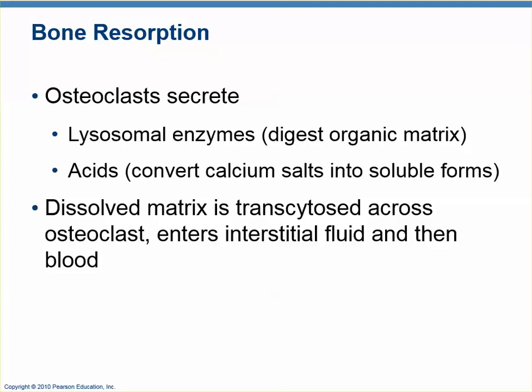Bone is taken away by osteoclasts, which act like macrophages that eat bone. They have enzymes that digest the organic parts — the osteoid — and acids that dissolve the calcium phosphate salts. They digest the proteins and release the minerals through transcytosis and exocytosis.